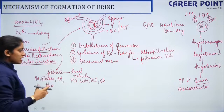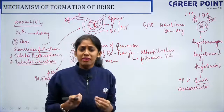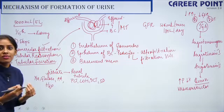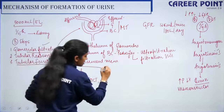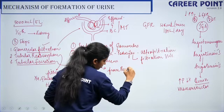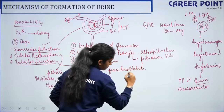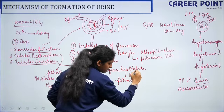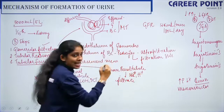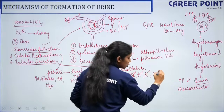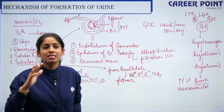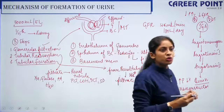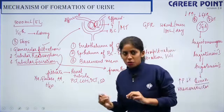The last step is tubular secretion. The renal tubule gives something back to the filtrate. Secretion happens from the renal tubule into the filtrate. The tubule secretes K⁺, H⁺, and ammonia into the filtrate to maintain ionic balance. These are the three stages of urine formation. The process of release of urine is called micturition, which we'll discuss tomorrow.